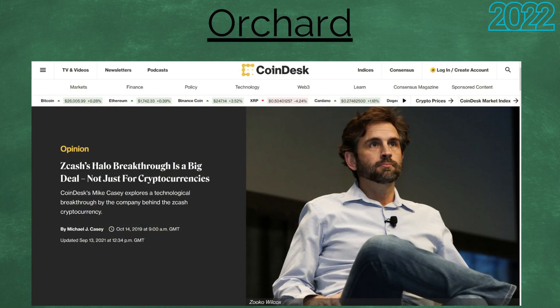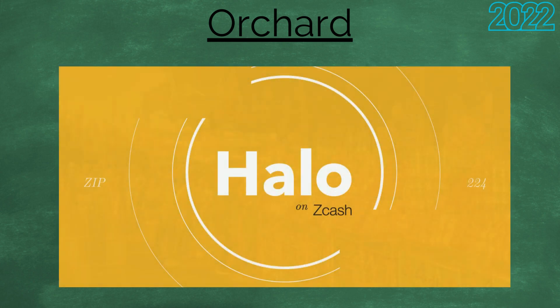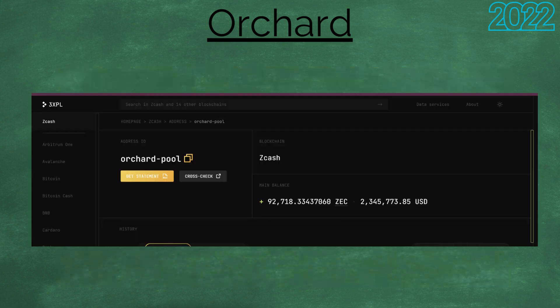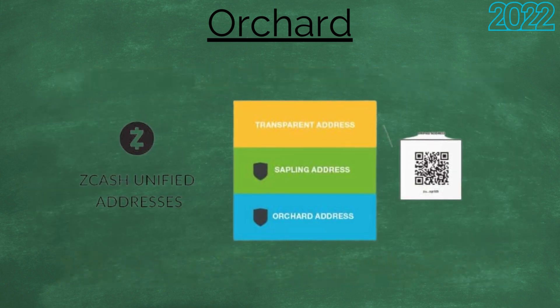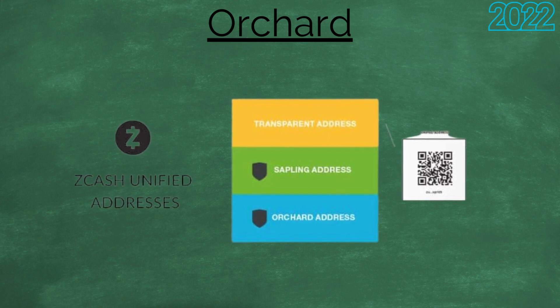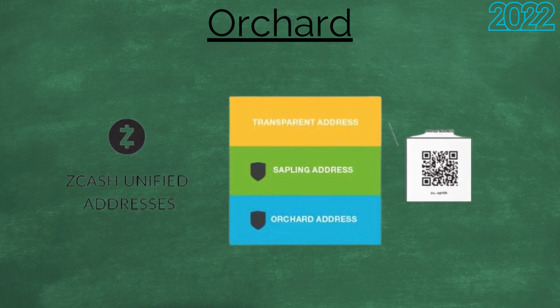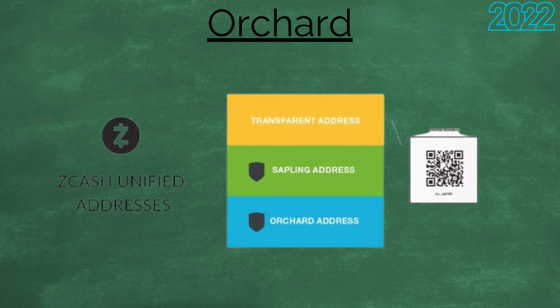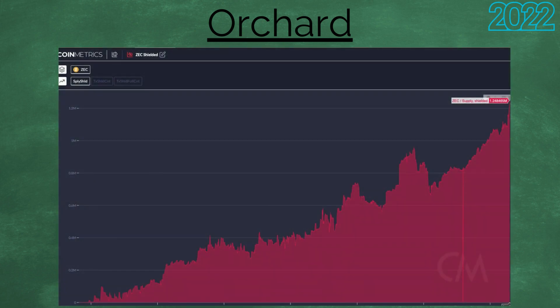Trustless ZK SNARKs and the Orchard shielded pool were made possible thanks to the scientific breakthrough made by Sean Bowe and the ECC engineers. Halo was implemented in the NU5 network upgrade in 2022. This removed the drawback of having to conduct any trusted setup ceremony. Alongside the security improvement was the activation of unified addresses, which combines the Sapling and transparent address types with Orchard into one easy-to-use address type. The advantage of this is that exchanges and merchants are able to facilitate shielded withdrawals and deposits a lot easier.